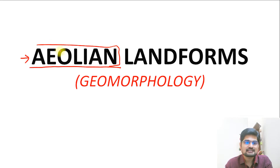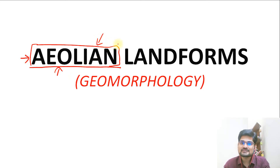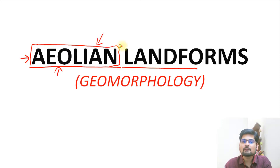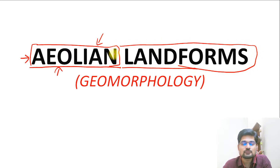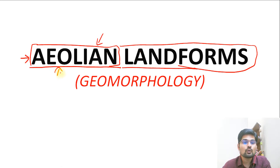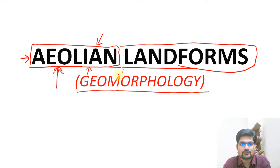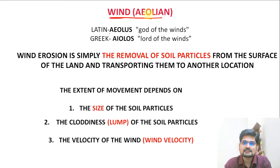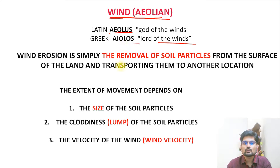Remember the word Aeolus, the Latin and Greek god of winds. We have already discussed this in process geomorphology, in the denudational processes. Aeolian landforms are made by wind action, which is more prominent in the desertic landscape because of the convection cycle due to differential heating. Wind action and landforms together are known as aeolian landforms.